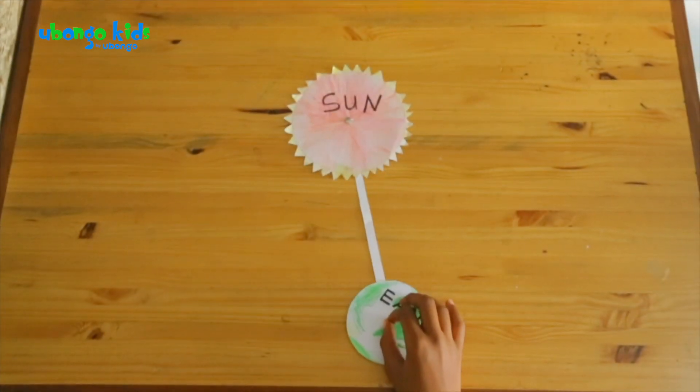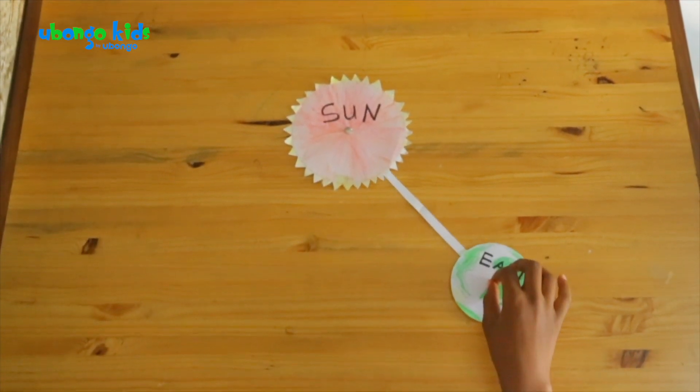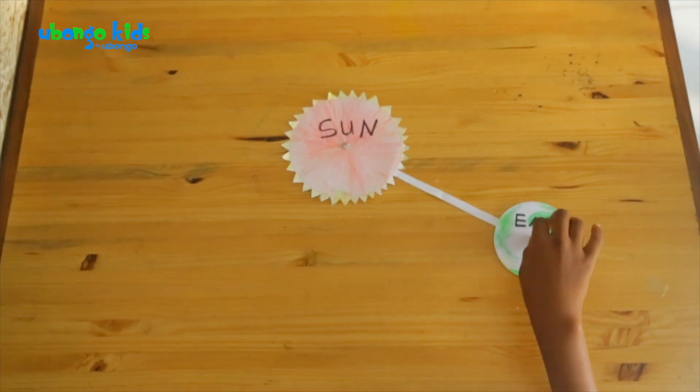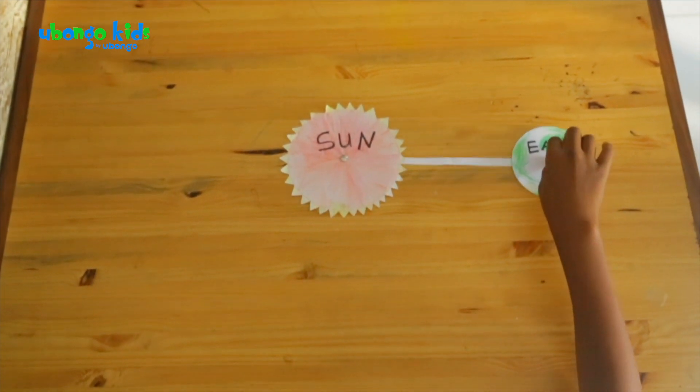The earth also orbits the sun. It takes one whole year or 365 days to complete one circle around the sun.